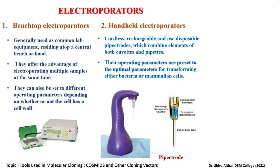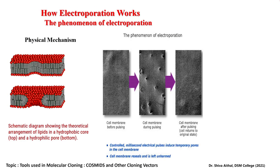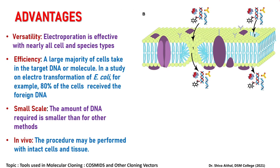Pipe electrodes of the handheld electroporator can be introduced directly into small test tubes or Eppendorf tubes containing your samples, making them very effective and handy for rapid methods. Electroporation works by a physical method — as you can see here in this real-time picture, a cell membrane before pulsing, a cell membrane during pulsing, and once the DNA is introduced inside, the cell membrane after pulsing returns back to its original state. Controlled millisecond electric pulses introduce temporary pores in the cell membrane, and if done skillfully, you can end up with a bacterial cell membrane which remains unharmed and intact as if nothing has happened.